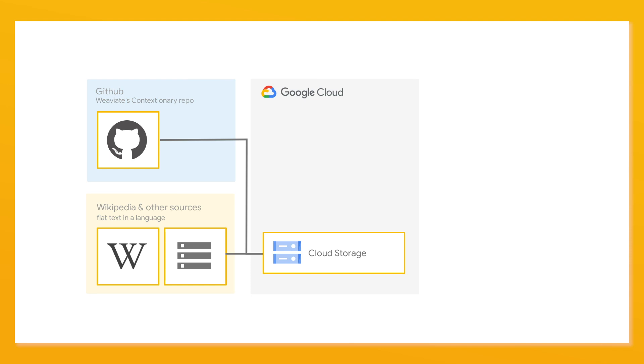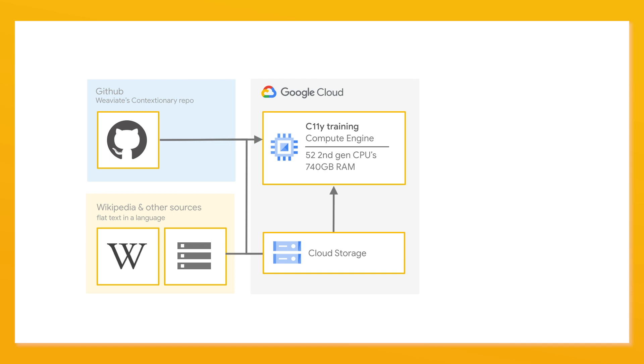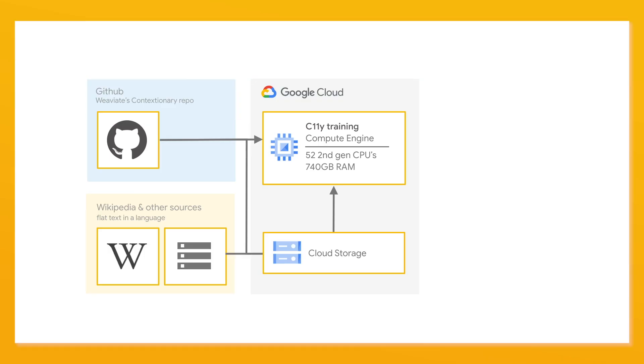In seconds we spin up a tremendously huge machine — we're talking many dozens of CPUs and around 800 gigabytes of memory. It starts to pull in all the data sources — hundreds of gigabytes of source material. It does the pre-processing and the training, then compresses all of that into about one and a half to two gigabytes of a model, pushes it to Docker Hub, shuts everything down, and we're done.